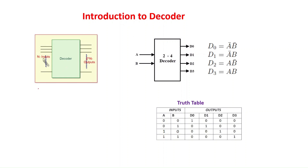A decoder is a combinational logic circuit device which is helpful to convert n number of input lines to 2^n output lines. If we have n number of input lines, we can get 2^n unique combinations. Input lines are nothing but binary bits. For two binary bits it can produce four combinations, for three it can produce eight combinations, and for four it can generate sixteen combinations.